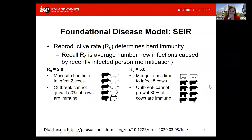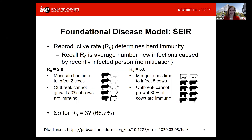COVID-19 is thought to have a reproductive rate between two and three. If that is true, we can calculate that herd immunity could be achieved somewhere between 50% and two-thirds, or 67%. This means that in the absence of vaccines or other interventions, we would need a significant portion of the population to have immunity.